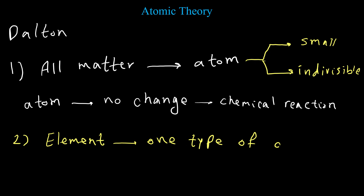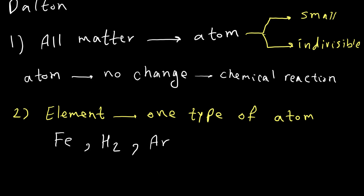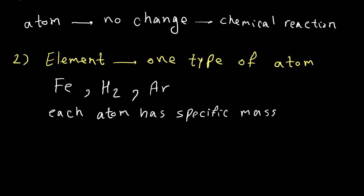The second postulate is talking about elements. An element has only one type of atom — like hydrogen, like iron, like argon. It doesn't matter if they have one atom in their structure or more than one atom like hydrogen, but all of these atoms are the same. Also, each type of atom for each element has a specific mass, so this mass is the characteristic of the atoms.